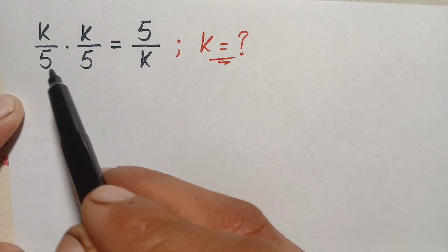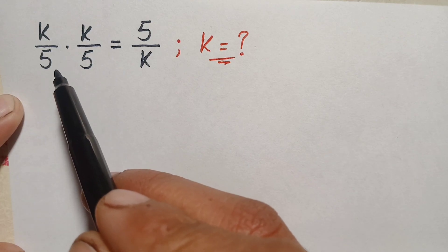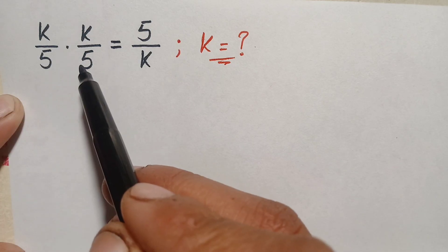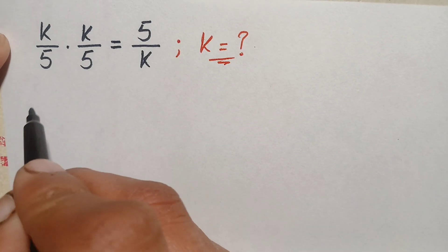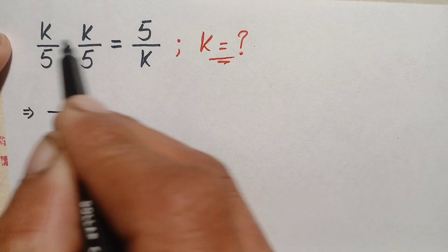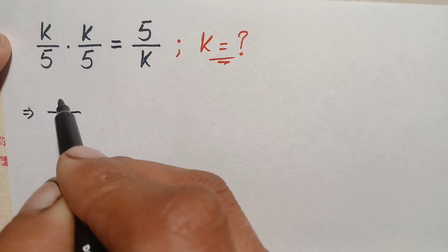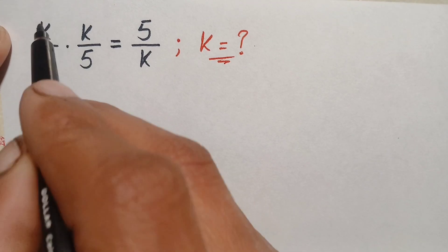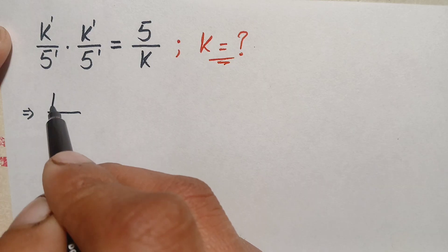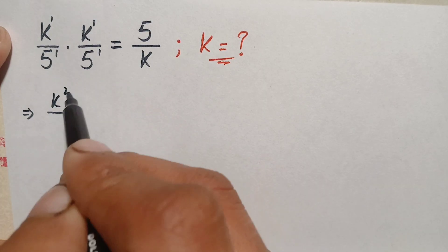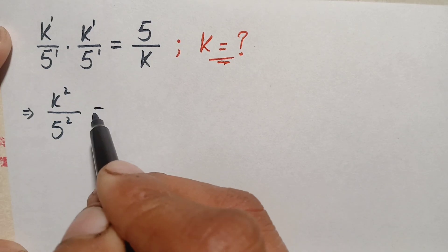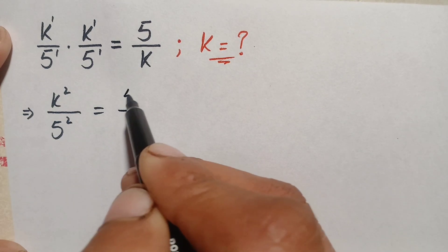First of all we will try to multiply these two fractions on the left hand side. To multiply these two fractions we will multiply numerator with numerator and denominator with denominator. This will become k times k in the numerator. We write k one time and add the powers — the powers are 1 in both numerator and denominator — so this becomes k raised to power 1+1 = 2, divided by 5 raised to power 2, which is equal to 5/k.